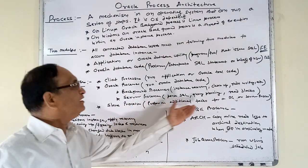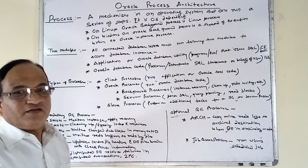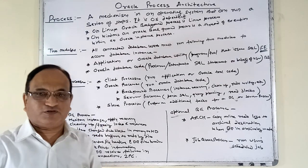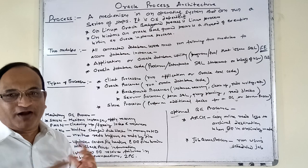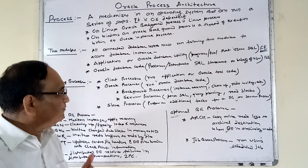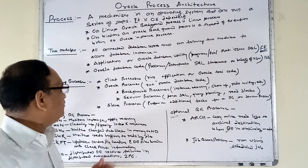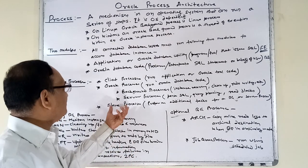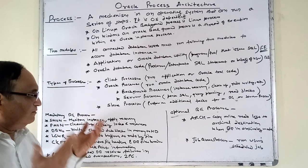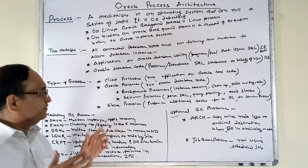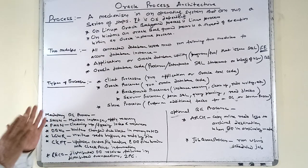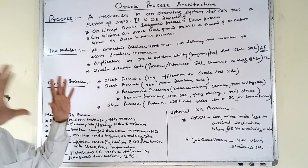The third type is slave processes. These are additional processes used to assist a main process. For example, if one DBWR process is not enough to write dirty blocks back to data files, additional DBWR slave processes can be started to support it. Slave processes perform additional tasks or reduce the burden on a single process.